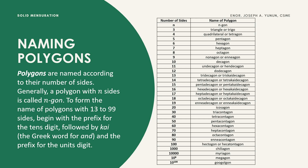Polygons are named according to their number of sides. Generally, a polygon with n sides is called an n-gon. To form the name of polygons with 13 to 99 sides, begin with the prefix of the tens digit, followed by 'kai' — the Greek word for 'and' — and the prefix for the units digit, as shown in the given table.